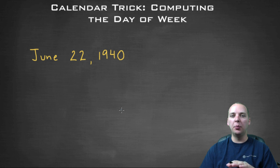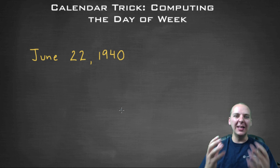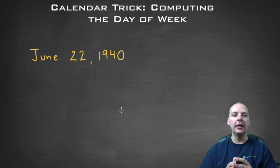So in this first video we're just going to give a broad overview of the algorithm, and in the later videos we'll go through all the details of the algorithm and how to account for leap years and things like that. So for example, let's say you have the day June 22nd, 1940, and you wanted to know what day of the week that fell on.